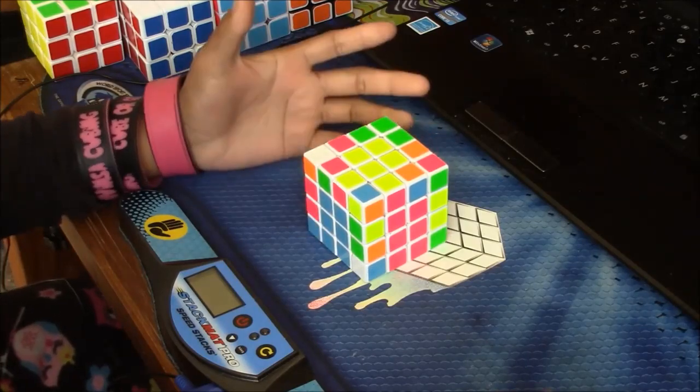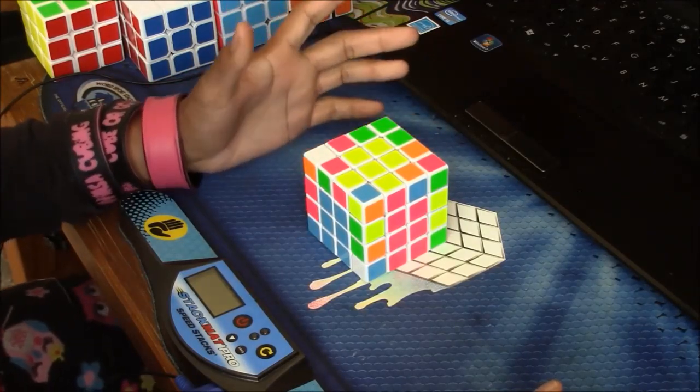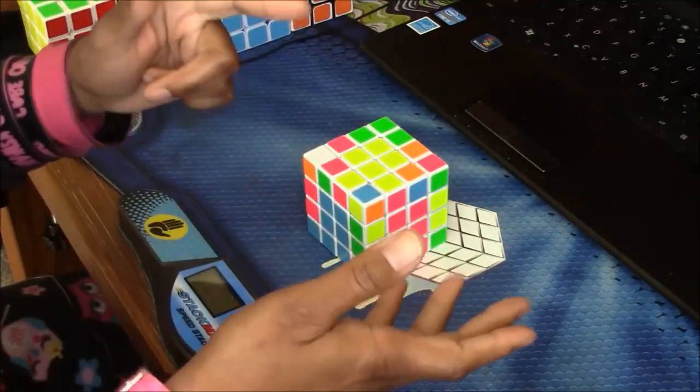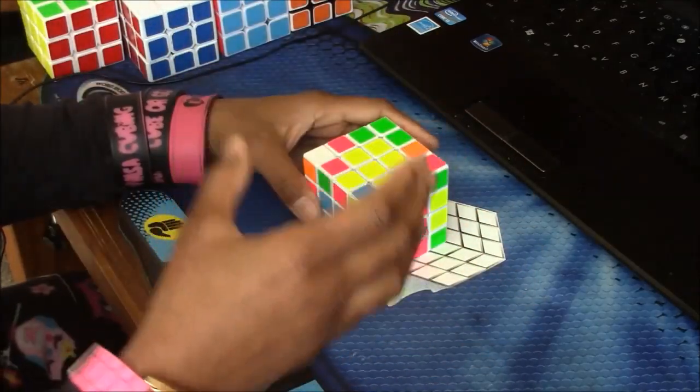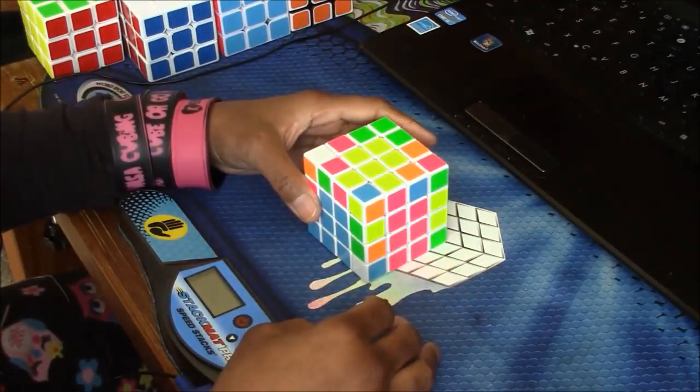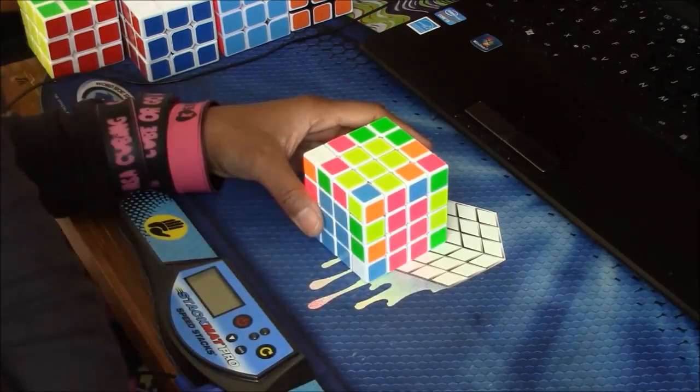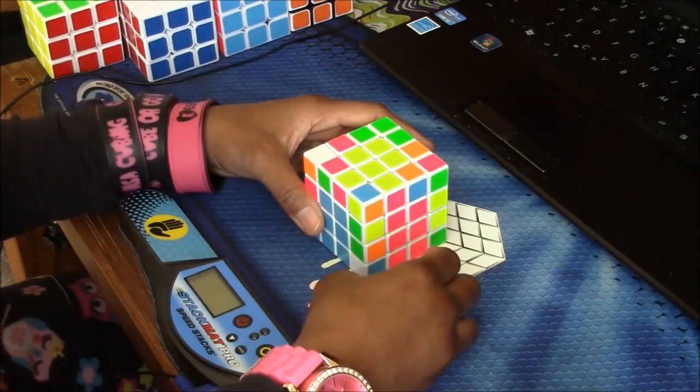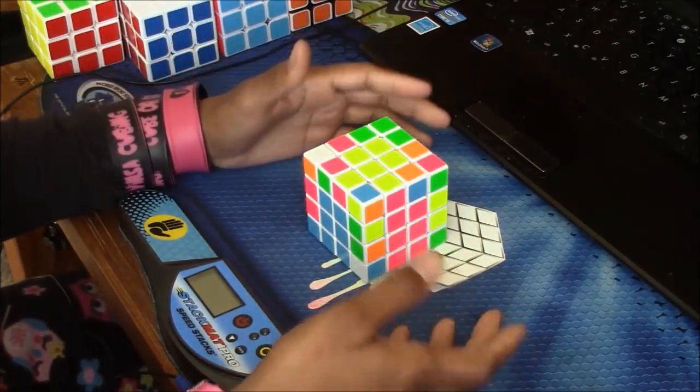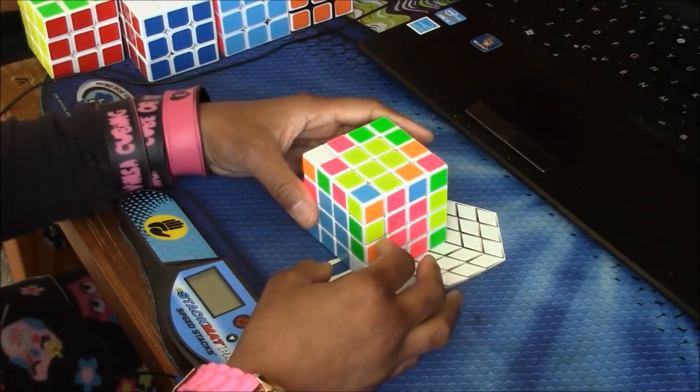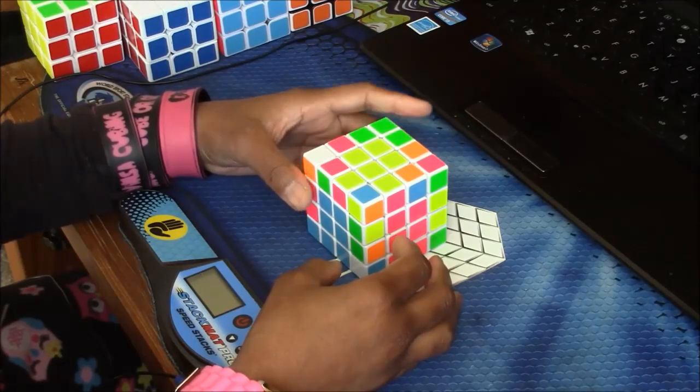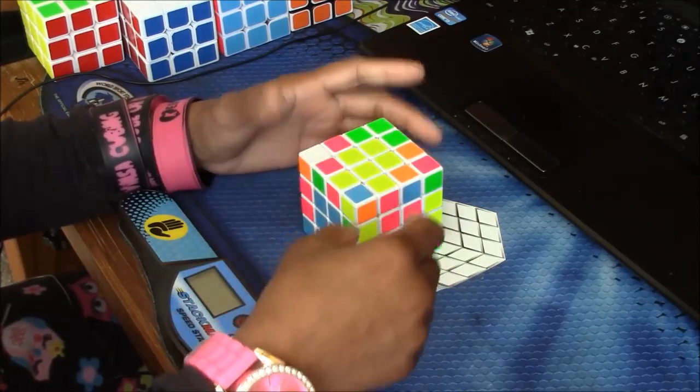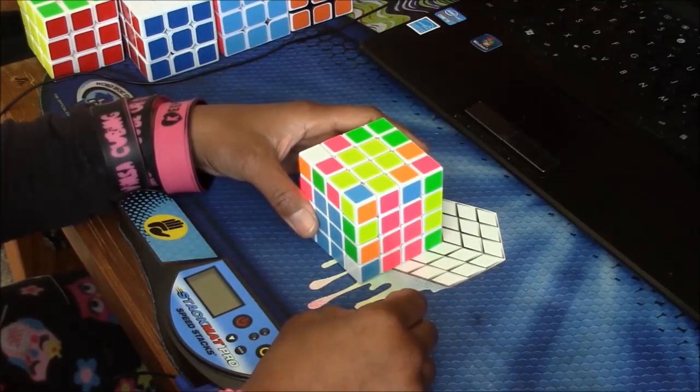I would say I recommend Lubix the most and then if Lubix is too expensive then Cubicle lube, the Lubicle Weight 4. And the best method to lube depends on what cube. If it's a 3x3 I would say you just lube the core like normal and then lube like 4 pieces in there that has contact spots if you know what I mean.